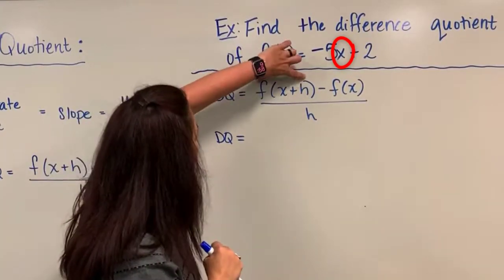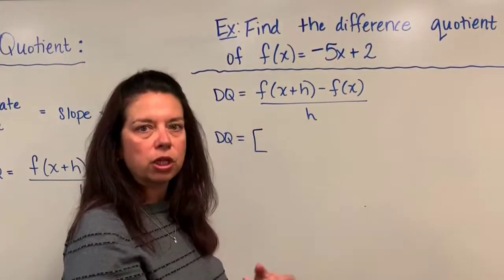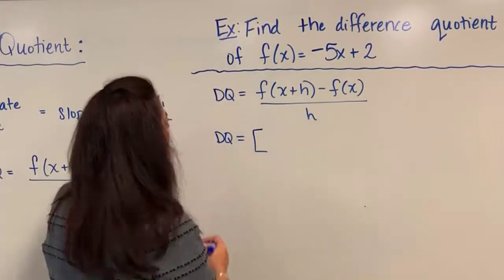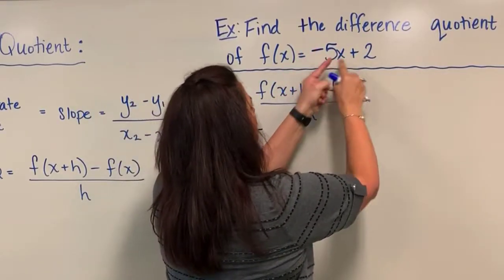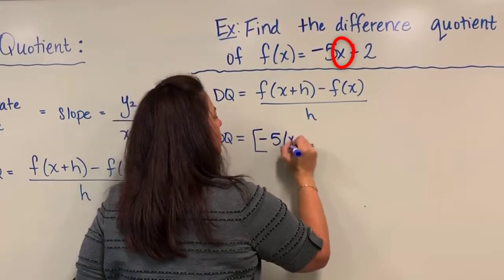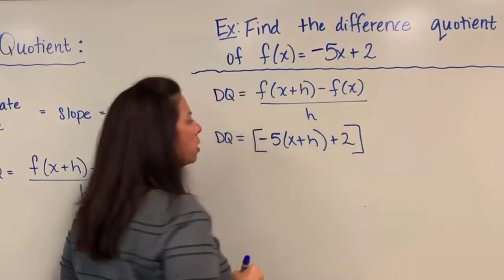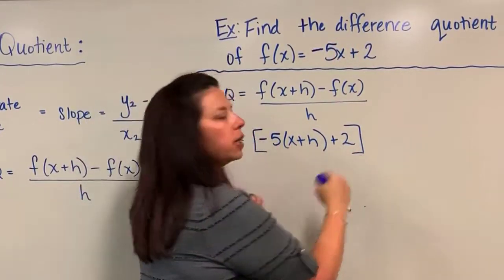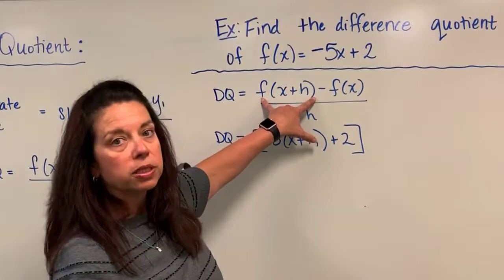So I'm going to start with this first section and I'm going to put this in brackets to indicate that I'm just starting with the f of x plus h. So I take my x plus h as a quantity and I will substitute it into my function, so I now have negative 5 times x plus h add 2 according to the function, and I'm going to close that bracket because all this stuff here in this bracket just pertains to this first section of the formula, f of x plus h.